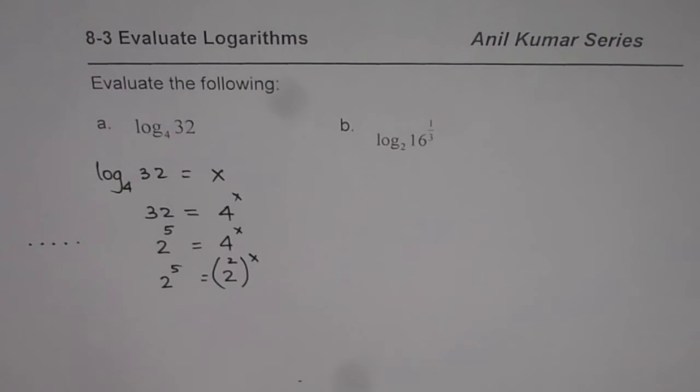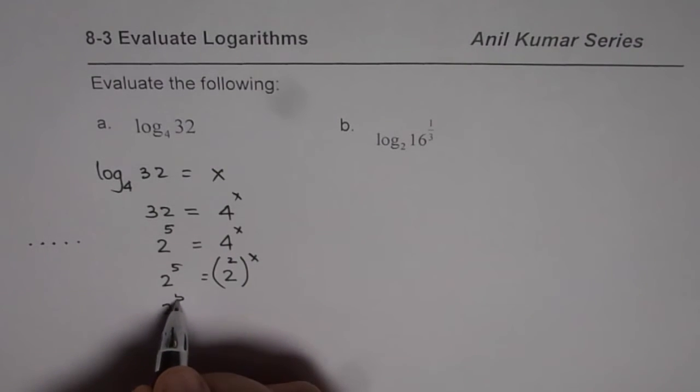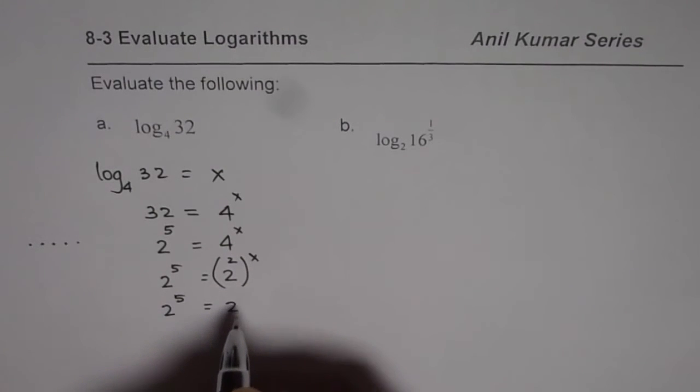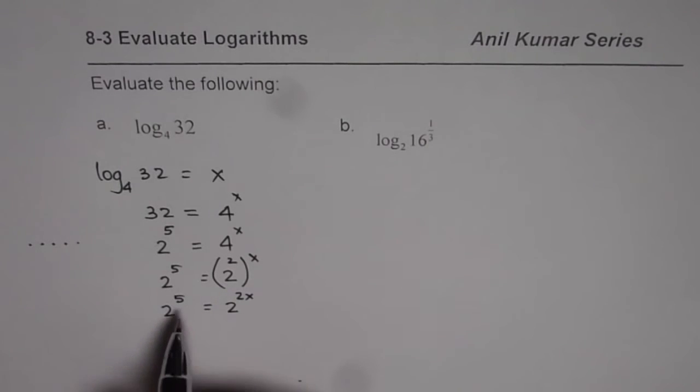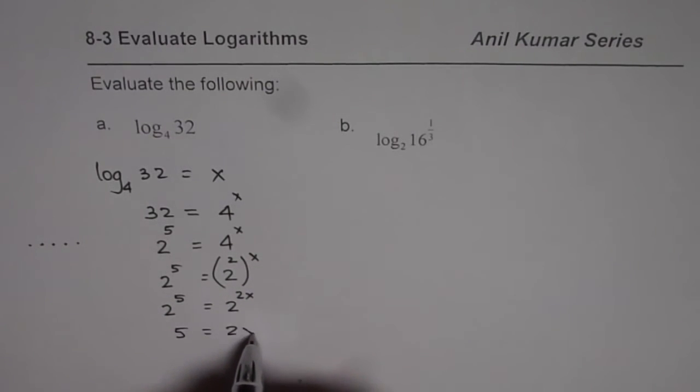2 square is 4. Now, we can say 2 to the power of 5 is indeed equals to 2 to the power of 2x. Comparing these two in this equation, exponent should be same since the base is same. So we get 5 is equal to 2x or x is equal to 5 divided by 2.